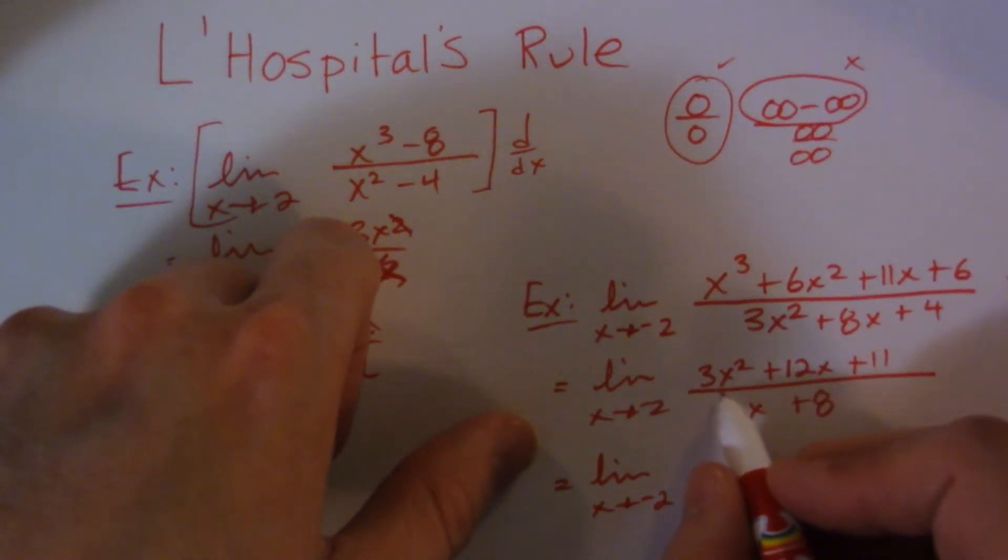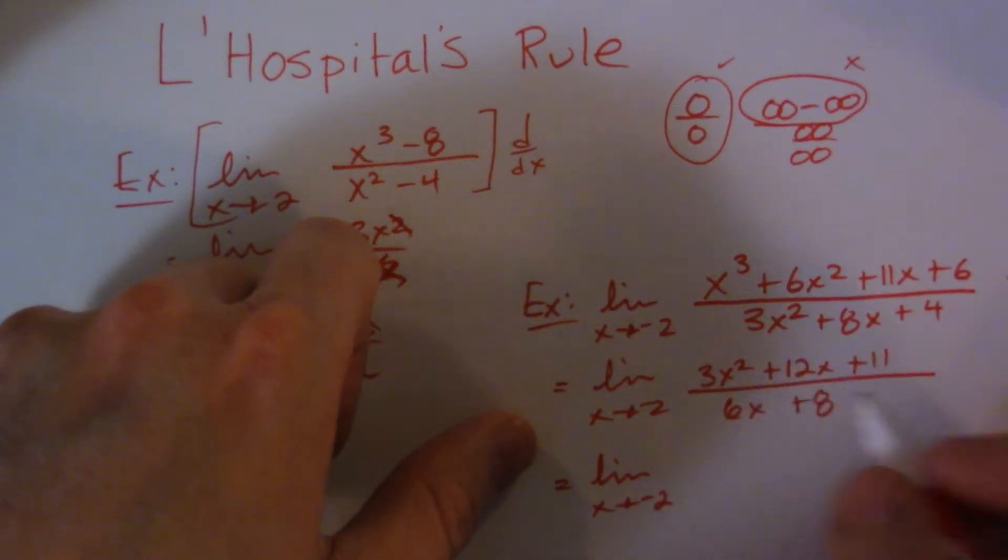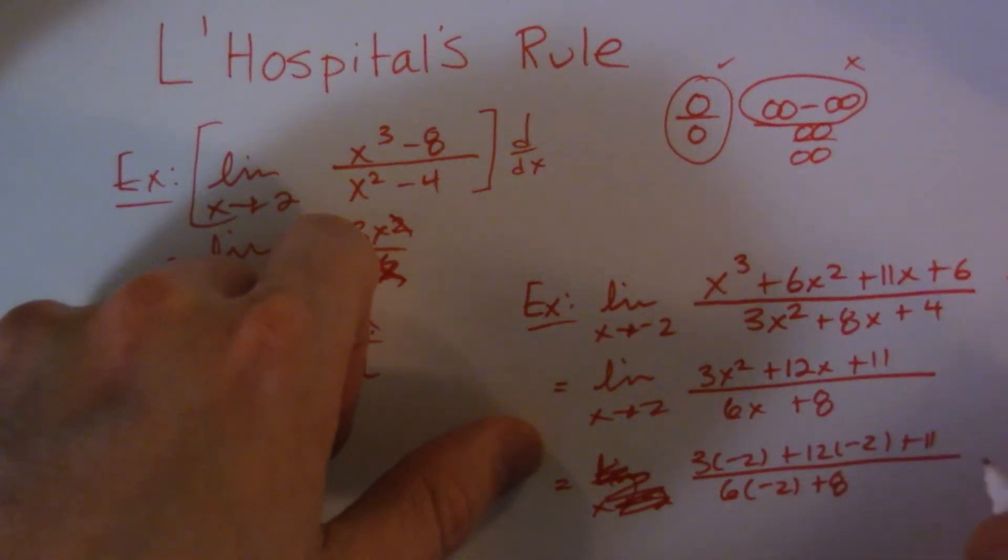So now I can simply plug this in. So I have 3 times negative 2 squared, I won't write the limit since I'm plugging it in, plus 12 times negative 2, plus 11, all over 6 times negative 2, plus 8. So when I do the math on this guy, don't forget my square, so this ends up 12 minus 24 plus 11, all over negative 12 plus 8. So that actually ends up being, when you do the math on it, 1 over 4.